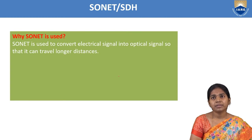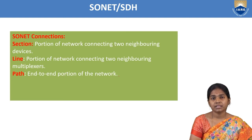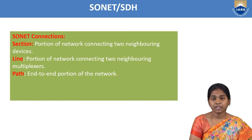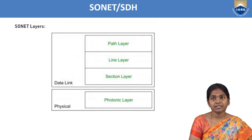SONET converts the electrical signal into optical signal so that it can travel longer distances. In SONET connections there are three types of optical links: section, line, and path. Section provides neighboring device connectivity. Line provides optical link between STS multiplexer/demultiplexer to add drop multiplexer, STS to STS, or add drop multiplexer to add drop multiplexer. Path is the end-to-end portion of the network. SONET has four layers: path layer, line layer, section layer, and photonic layer.